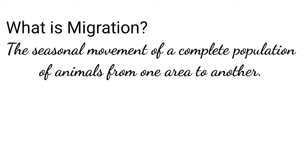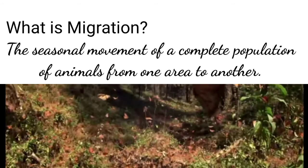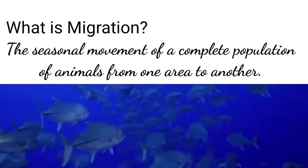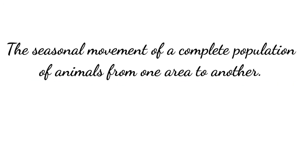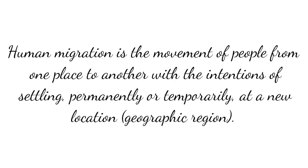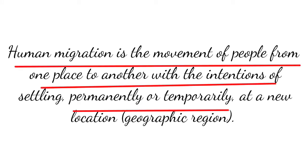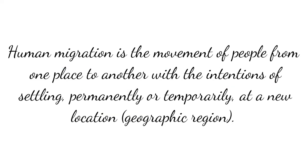What is migration? Migration refers to the movement of animals, birds, and marine animals from place to place seasonally in search of food and shelter. But here in this chapter we are going to discuss human migration, which means the movement of people from one place to another with the intention of settling down permanently or temporarily at new geographic locations.